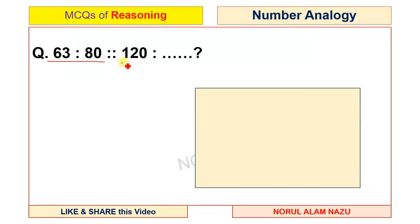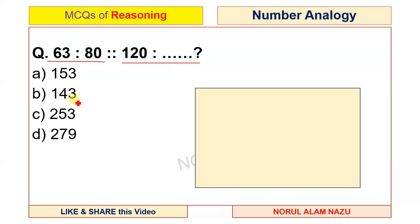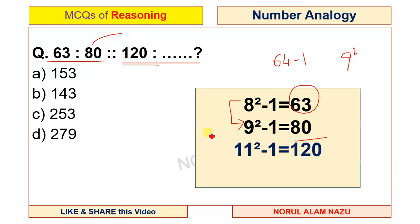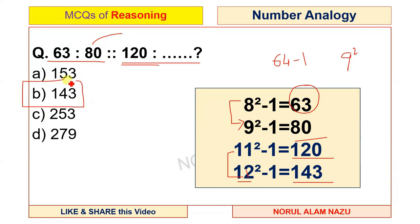60 is to 80, 120 is to what? The options are 153, 143, 253, 279. Using 8 squared minus 1: 8 squared is 64, 64 minus 1 is 63. 9 squared is 81, 81 minus 1 is 80. 11 squared is 121, 121 minus 1 is 120. 12 squared minus 1: 144 minus 1 is 143. So option B, 143 is the correct answer.